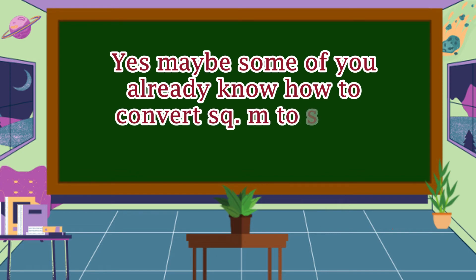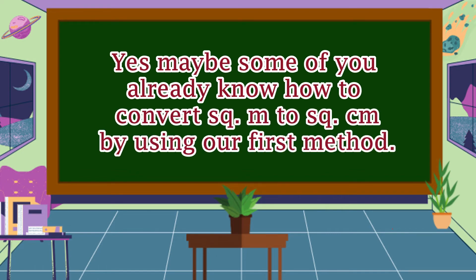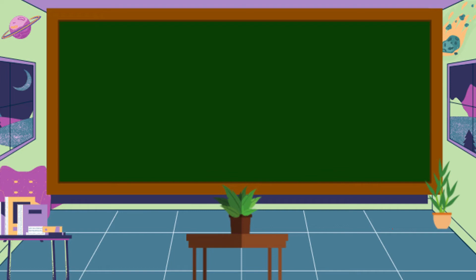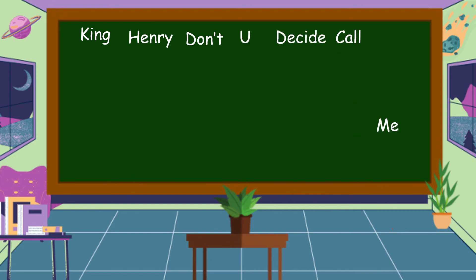How did you find the usual process? For those who didn't understand yet, don't worry — let's use another method that is easier for converting square meters to square centimeters and vice versa. We're going to use the mnemonic sentence: 'King Henry don't you decide call me.' King stands for kilo, Henry for hecto, don't for deka.